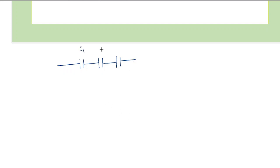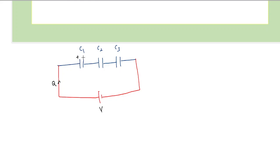Here we take three capacitors called C1, C2, and C3. We connect these capacitors to a battery which provides a voltage drop of V. The charge Q flows into the combination such that the charge on the plates would be positive Q and negative Q alternating across each capacitor.